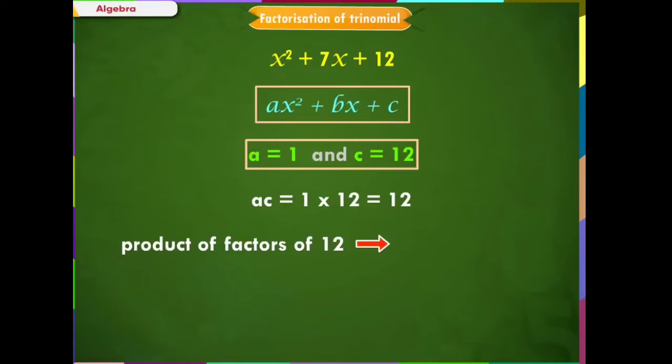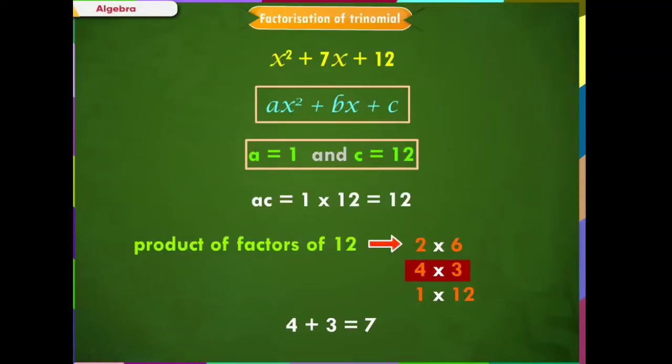Next, we find product of factors of 12. The product of factors are 2 × 6, 4 × 3, and 1 × 12. In these combinations of numbers, 4 and 3 are such numbers which when added, we get 7. 7 is present in the middle term.